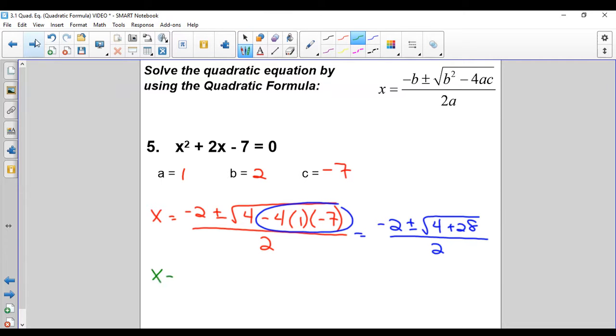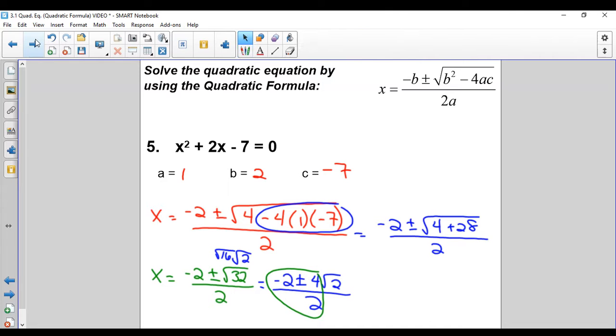4 plus 28 is 32. We can also simplify that radical. I'm looking for the biggest factor that is a perfect square. The biggest factor of 32 that is a perfect square is 16, so it'd be negative 2 plus or minus 4 radical 2 all over 2. Negative 2, 4, and 2 all have 2 in common, so we reduce them each by 2. Negative 1 plus or minus 2 radical 2. There are five examples which should be plenty of the quadratic formula.